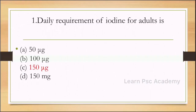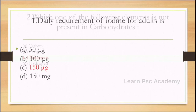Second question: daily requirements of iodine for adults. Options: 50 µg, 100 µg, 150 µg, 150 mg. Correct answer: 150 µg.